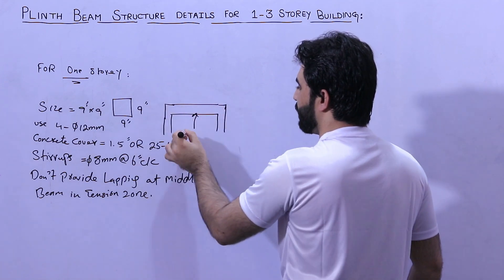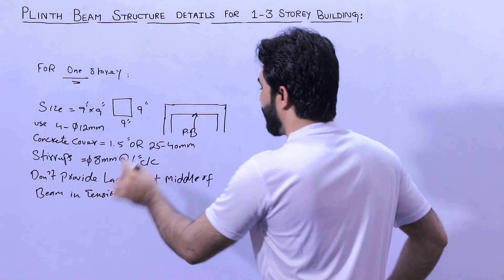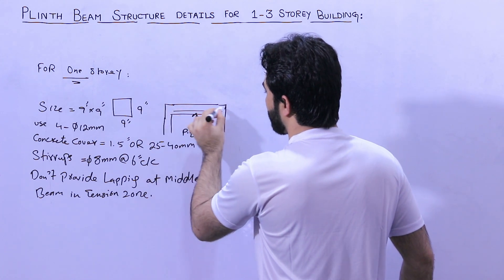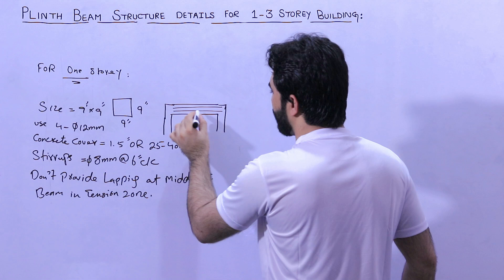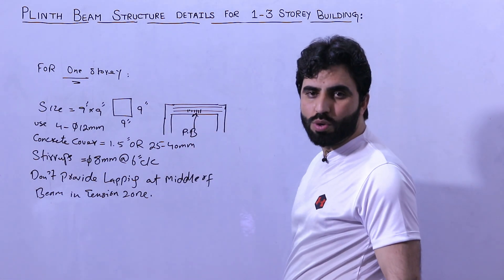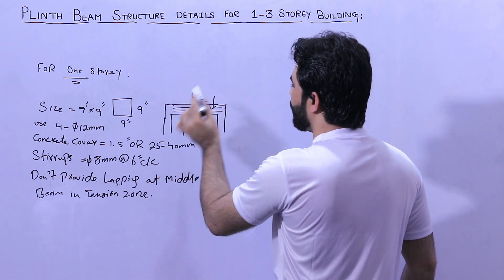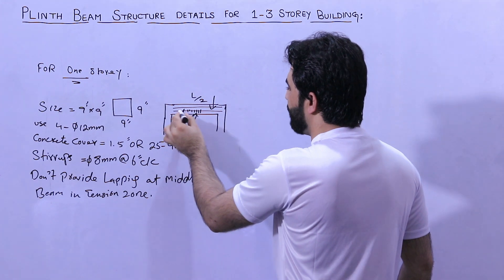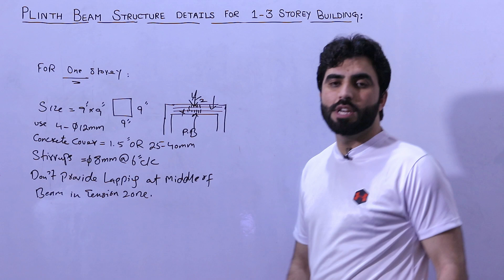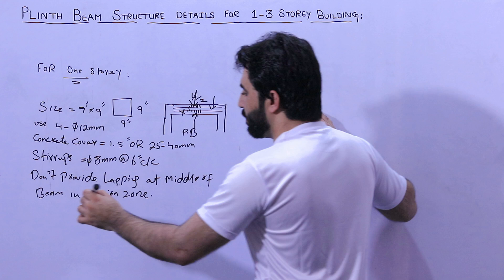This is the plinth beam. You can see the steel reinforcement — this is the bottom portion and this is the top portion. Lapping is not allowed at the bottom portion in the tension zone at the middle, that is L by two. At the top portion, if you need to provide lapping, it is allowed at the middle of the top. The development length should be provided at the end of the beam.